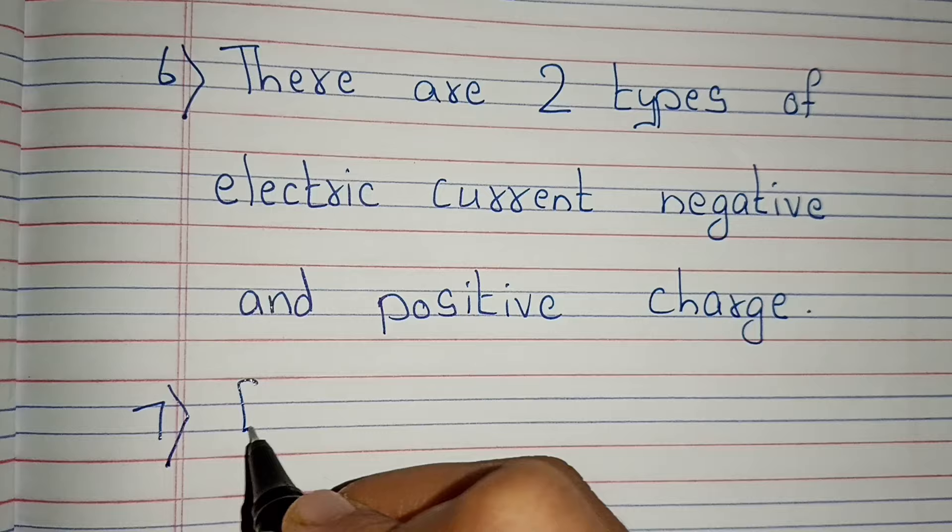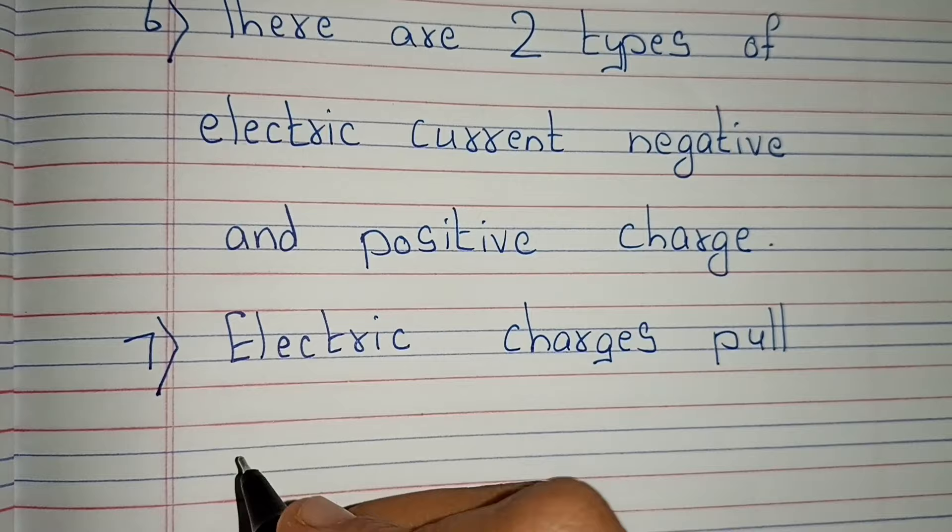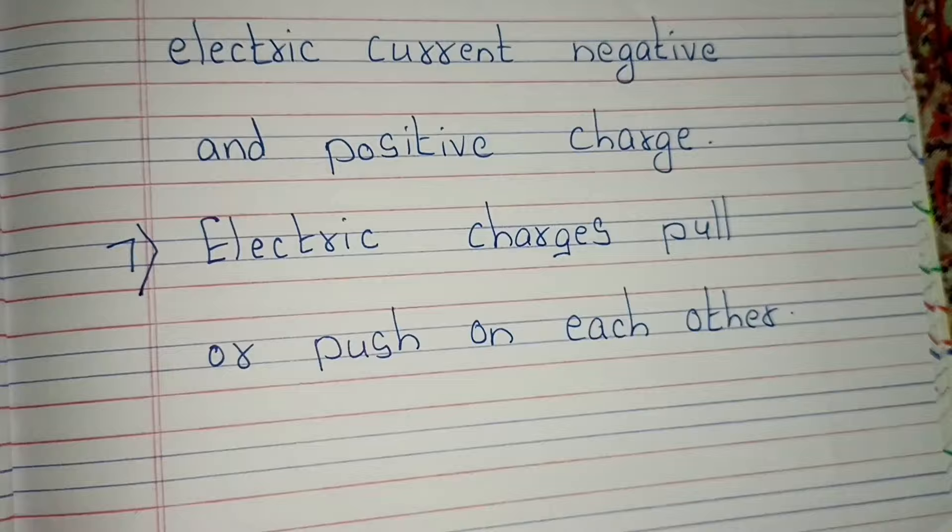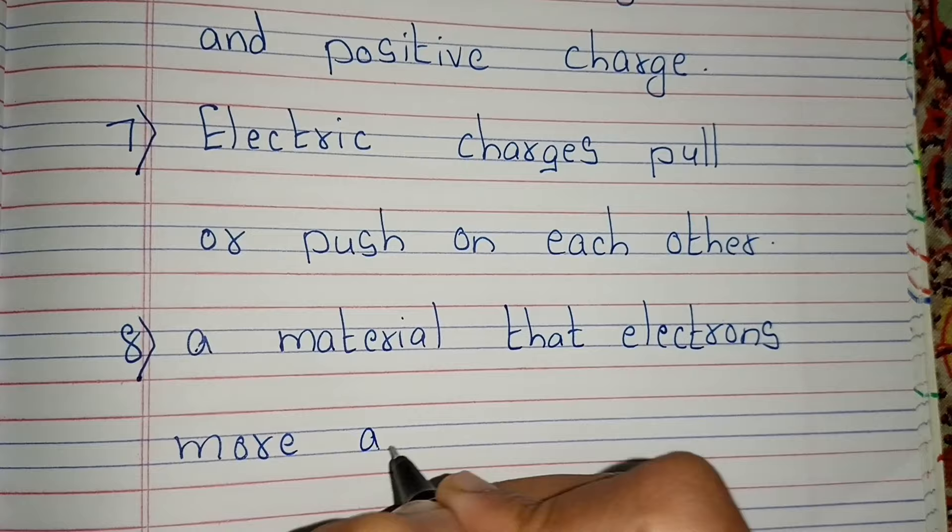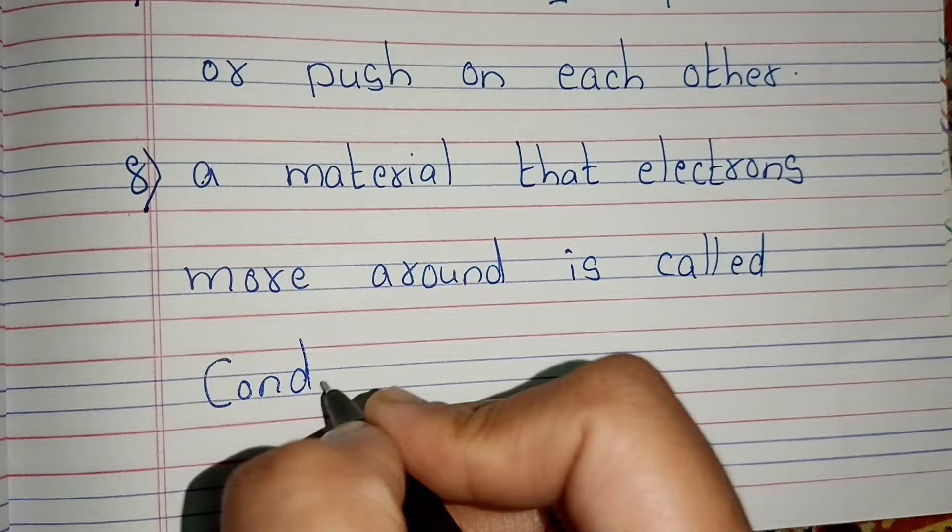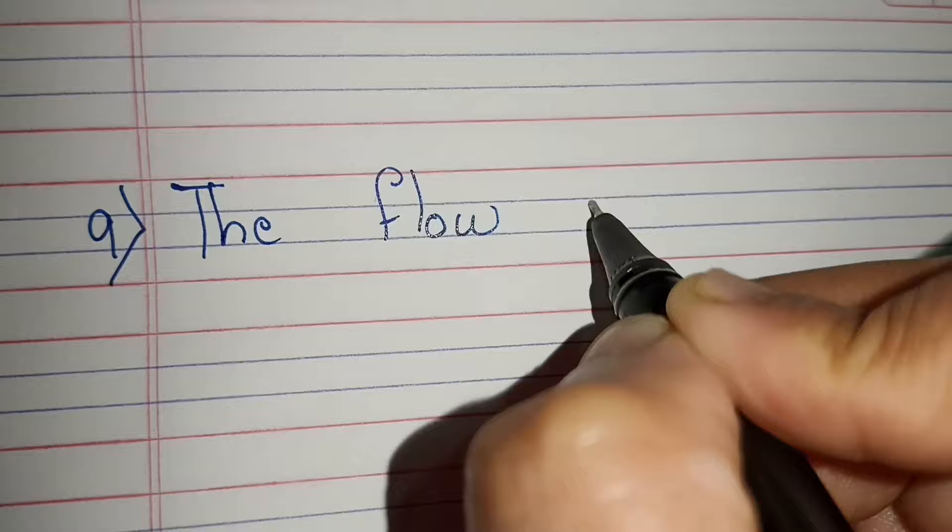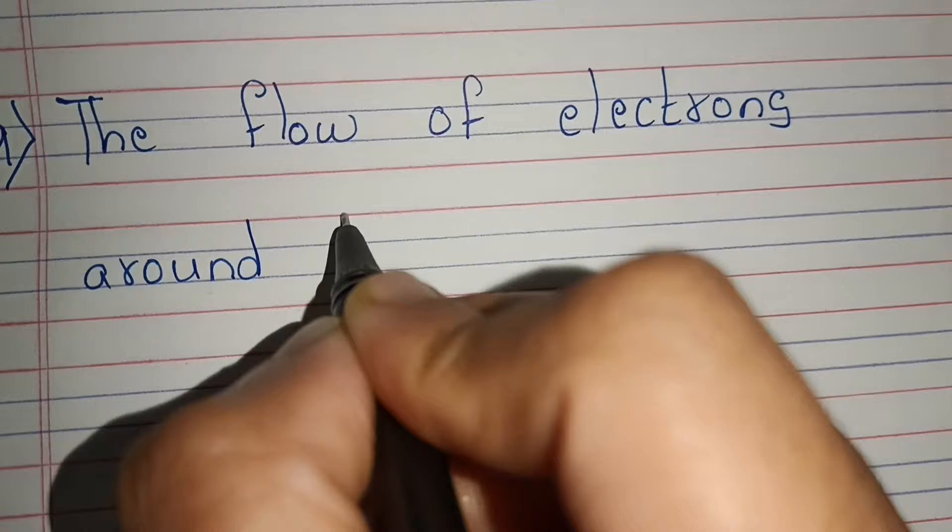Electric charges pull or push on each other. A material that electrons move around is called a conductor. The flow of electrons around the circuit is called electric current.